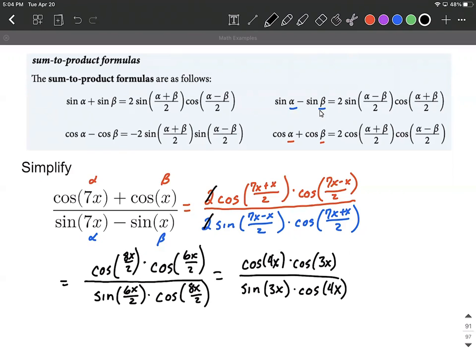Since everything's multiplied together, we've got products in the numerator and denominator, so it's okay to cancel out. We have a common factor: cosine of 4x. This is going to leave us with cosine of 3x divided by sine of 3x.